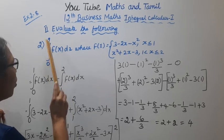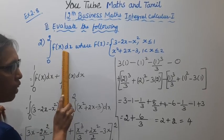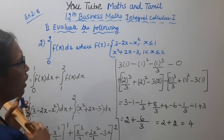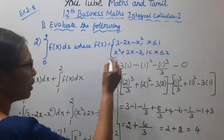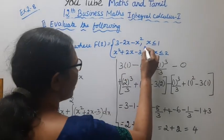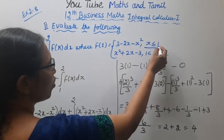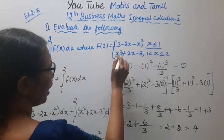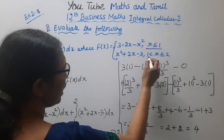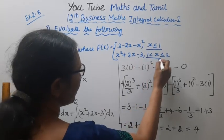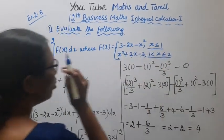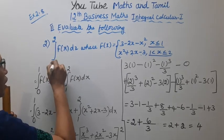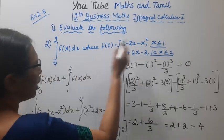Evaluate the integration from 0 to 2 of f(x) dx, where f(x) equals 3 minus 2x minus x² when x is less than or equal to 1, and f(x) equals x² plus 2x minus 3 when 1 is less than x less than or equal to 2. We write this as 0 to 2.